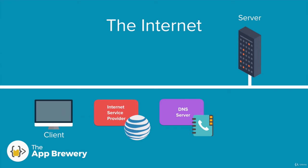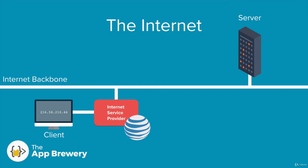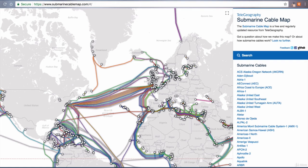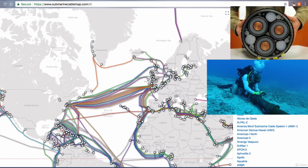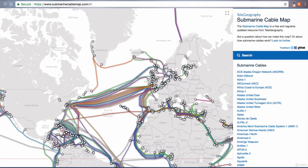The next thing that happens is you send a direct request to that address through your internet service provider via what's called the internet backbone. The internet backbone isn't some analogy for clever programming — it's literally the backbone of the internet. If you head over to submarinecablemap.com, you can view all of the underwater cables that power the internet. The internet is made up of these huge sprawling masses of wires connecting all of the world's internet users. As you can imagine, it's a pretty complex world out there.